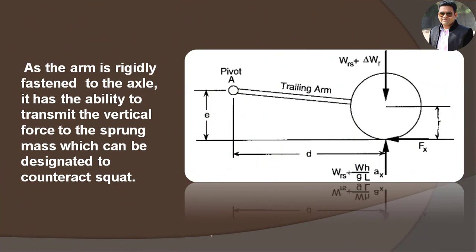In my previous video, we concluded with the statement that as the arm is rigidly fastened to the axle, it has the ability to transmit the vertical force to the sprung mass, which can be designated to counteract the squat. We also derived the expression: the ratio of vertical reaction to tractive force, Fz divided by Fx, equals E by D. I promised that we are going to estimate this ratio E/D in this video.